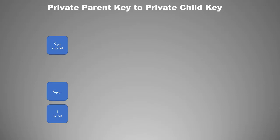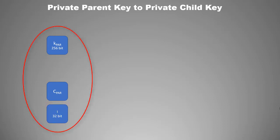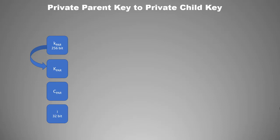Here is your extended private parent key. It has a private key denoted by small k with 'par' to indicate it is the private parent key, a chain code denoted by C, and an index number which is a 32-bit value starting from 0. To create an extended private child key, you first derive the public parent key from the private parent key using elliptic curve cryptography. This public parent key, the parent chain code, and the index number are used as input to a hashing algorithm called HMAC-SHA512, which is a one-way hash function — you can derive child from parent but not parent from child.